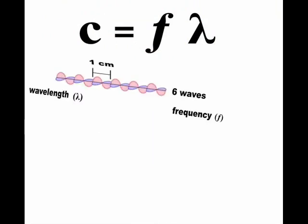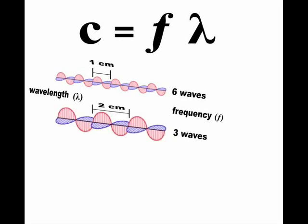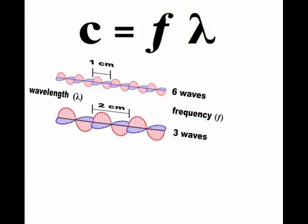Here we have six waves, each one centimeter long, passing a given point in one second. What physical reason is there for the frequency to drop to three waves per second when wavelength increases to two centimeters? What physically prevents both the wavelength and the frequency from increasing so that light can travel faster?